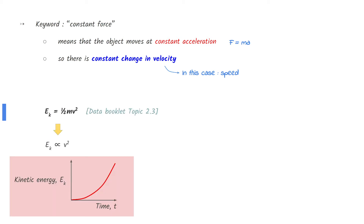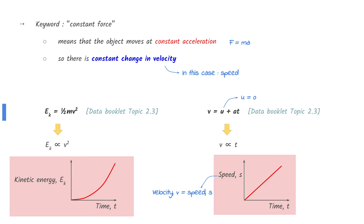Since kinetic energy is directly proportional to the velocity squared, the kinetic energy will increase exponentially. Using one of the equations of motion, we can see that the speed is directly proportional to time, since initial velocity is zero and acceleration is constant. So the speed-time graph will be linear.